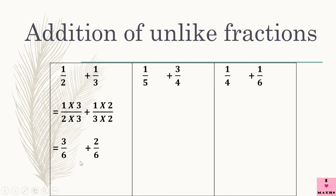Now 3 upon 6 plus 2 upon 6. If you remember, when I was teaching you addition of like fractions, I told you — whenever we have to add 2 like fractions, we only add the numerators and we never add the denominators. So 3 plus 2 is 5 and the answer is 5 upon 6. So children, 1 upon 2 plus 1 upon 3 is equal to 5 upon 6.